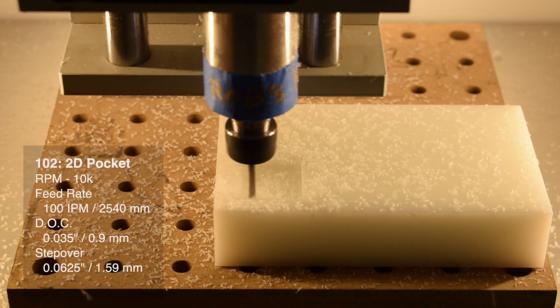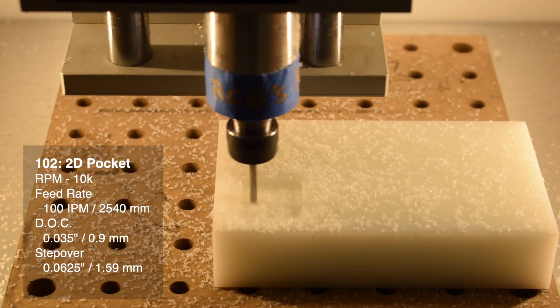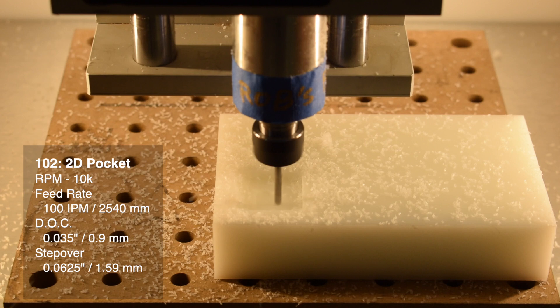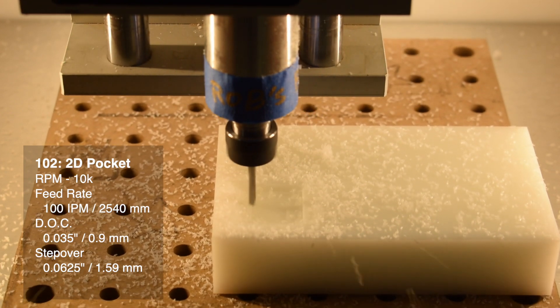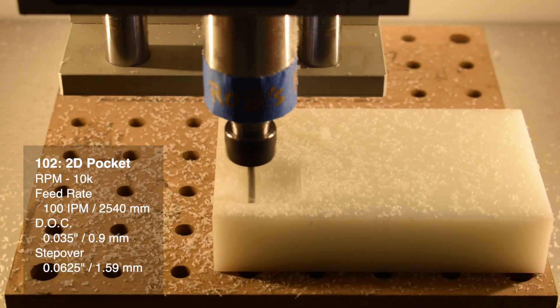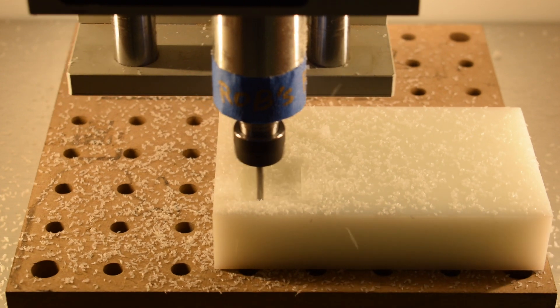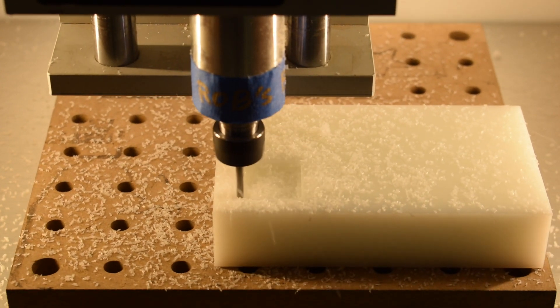First up is pocketing, 10,000 rpm and 100 inches per minute. That's an effective chipload of 5,000 per tooth. Depth of cut, 0.035 inches and a 50% stepover. I basically just took my acrylic recipe and cranked it up by a little bit.